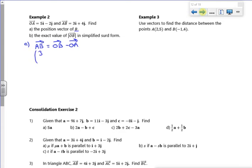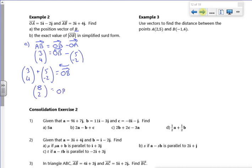So AB is (3, 4). OB I don't know. I can't find it anywhere. So OB I don't know, take away OA which is (5, -2). So if I take that on the other side and add it on, I've got (3, 4) added to (5, -2). So that's my position vector to B. So 3 plus 5 is 8, 4 plus minus 2 is 2. And that's OB there.